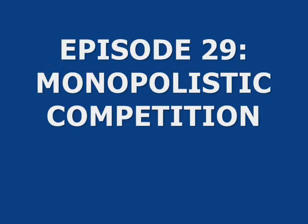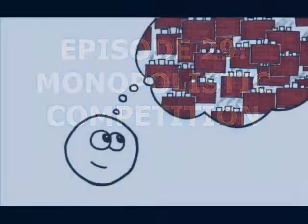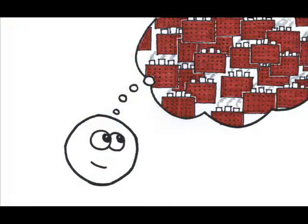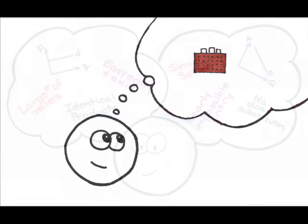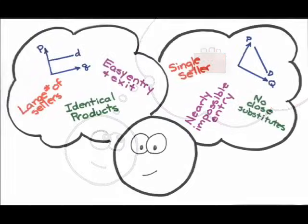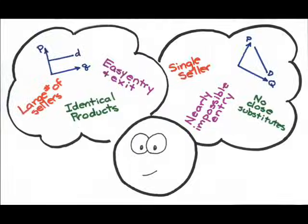Because you already know about competition from episode 26 and monopoly from episode 27, you actually have all the information you need to analyze a monopolistically competitive market. As the name of this structure suggests, it's something of a mashup of the characteristics of a perfectly competitive market and those of a monopoly market.